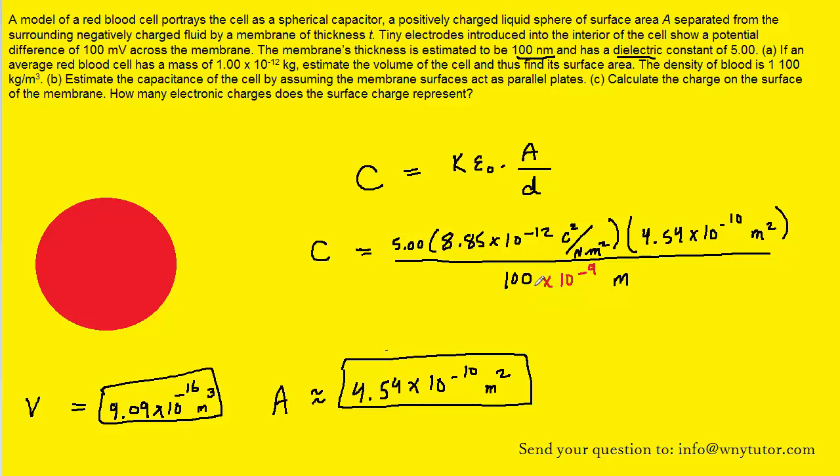Notice that for the distance d, we converted the nanometers to a standard unit of meters by multiplying by 10 to the minus 9. We have to make sure all of our quantities are in their standard units. So when we process this number, we get roughly 2.01 times 10 to the minus 13. And then the standard unit of capacitance is the farad. And so this would be the correct answer to part B.